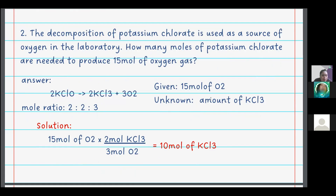For number 2, the decomposition of potassium chlorate is used as a source of oxygen in the laboratory. How many moles of potassium chlorate are needed to produce 15 moles of oxygen gas? The balanced equation is: 2KClO3 → 2KCl + 3O2.